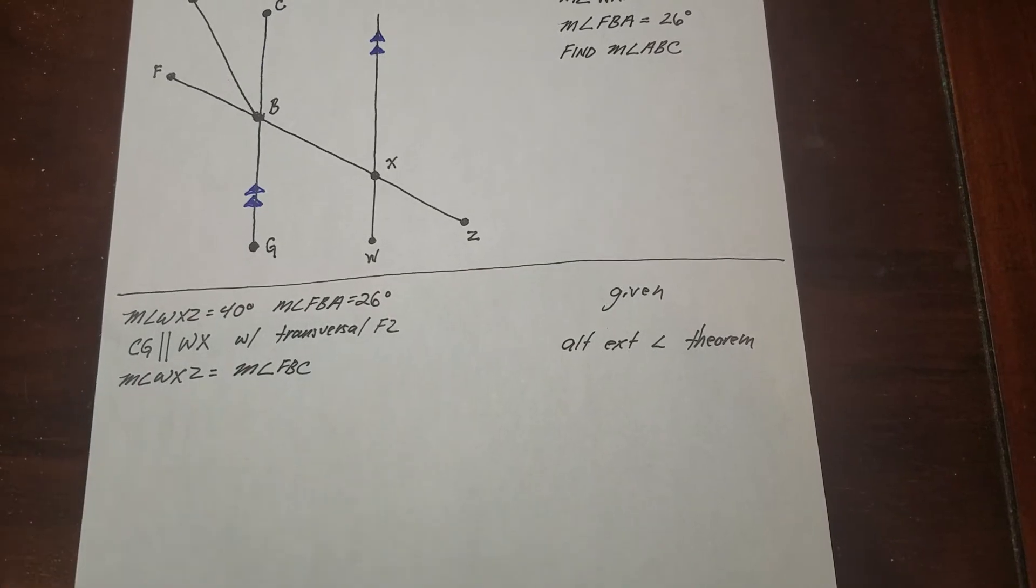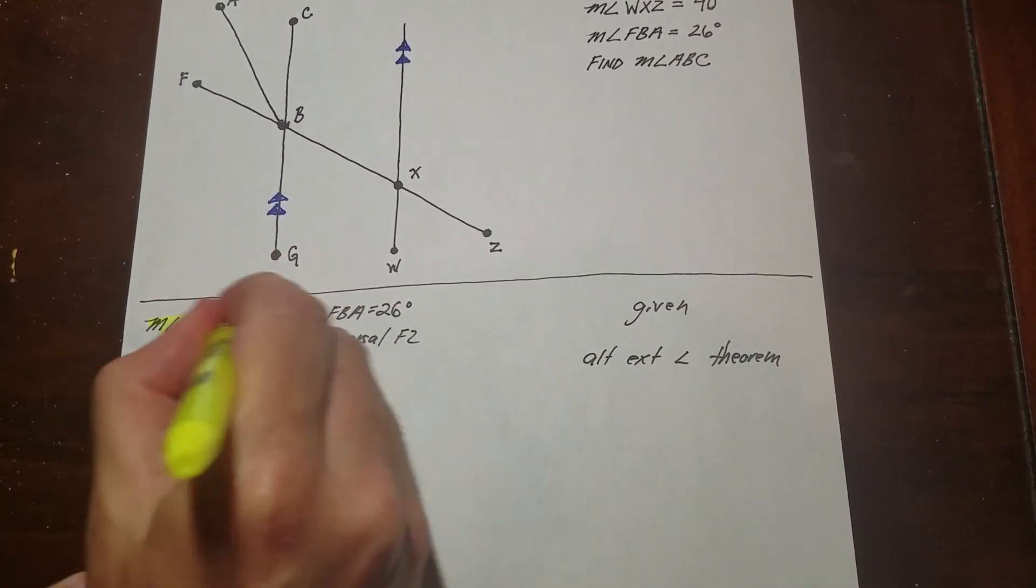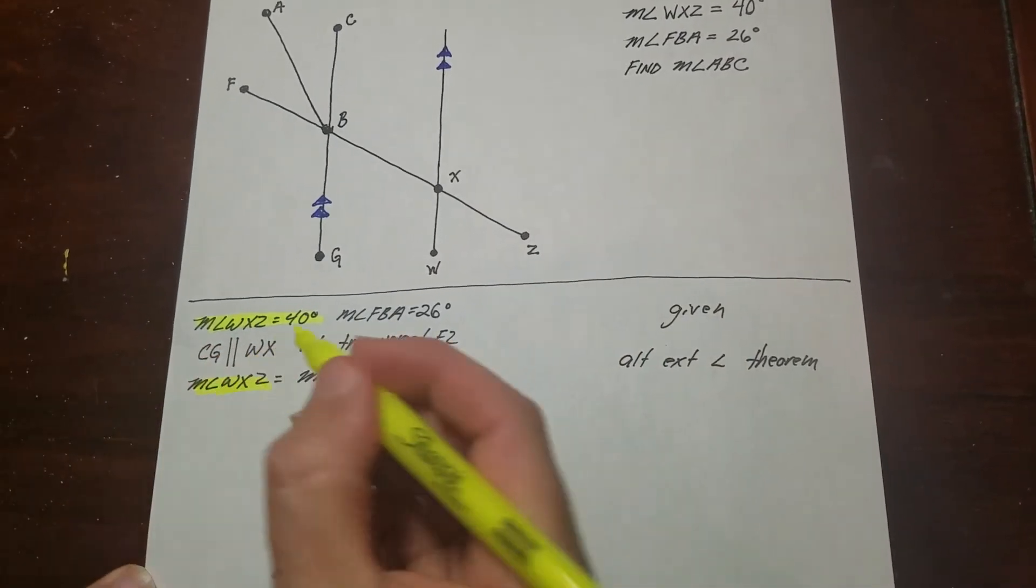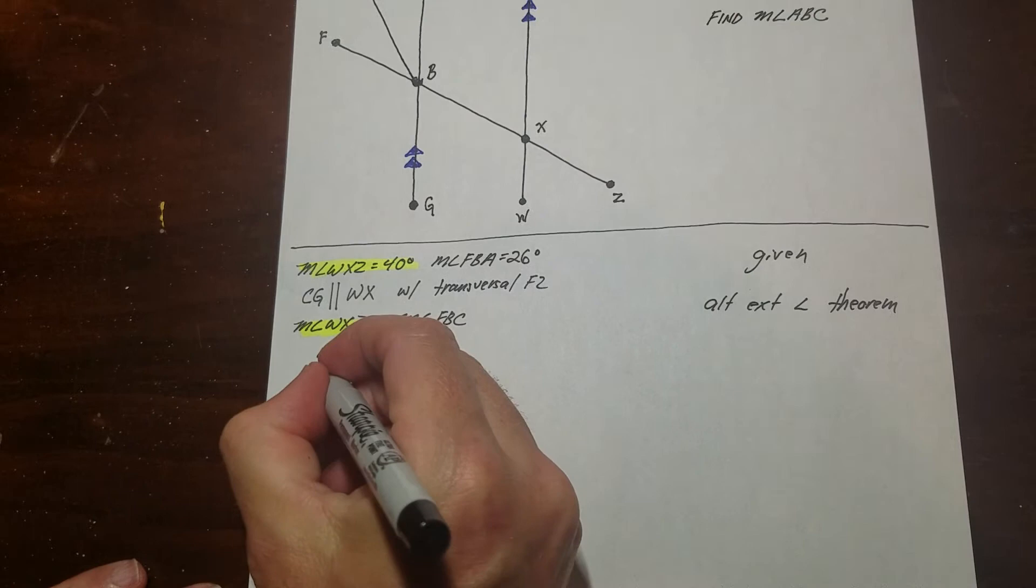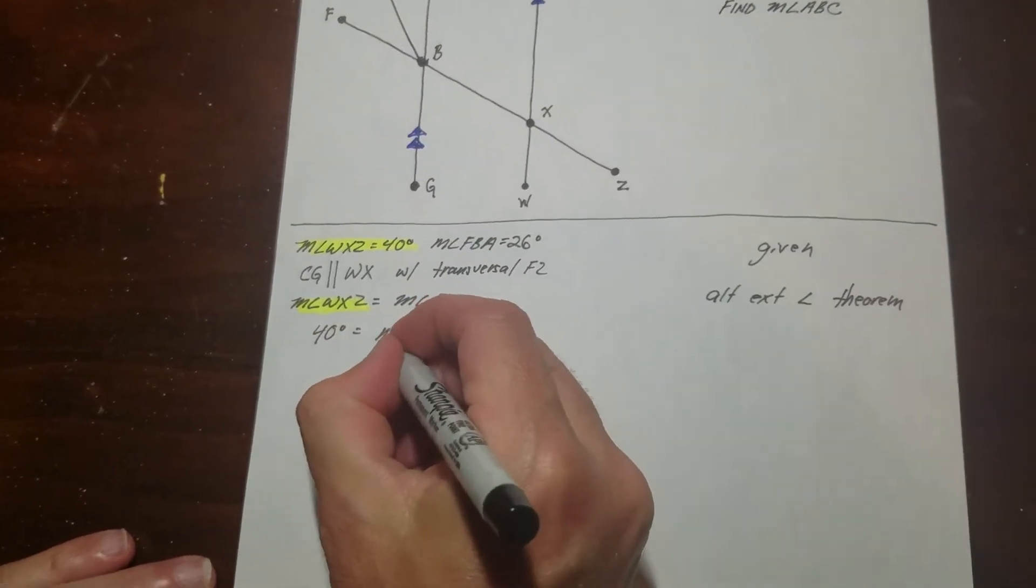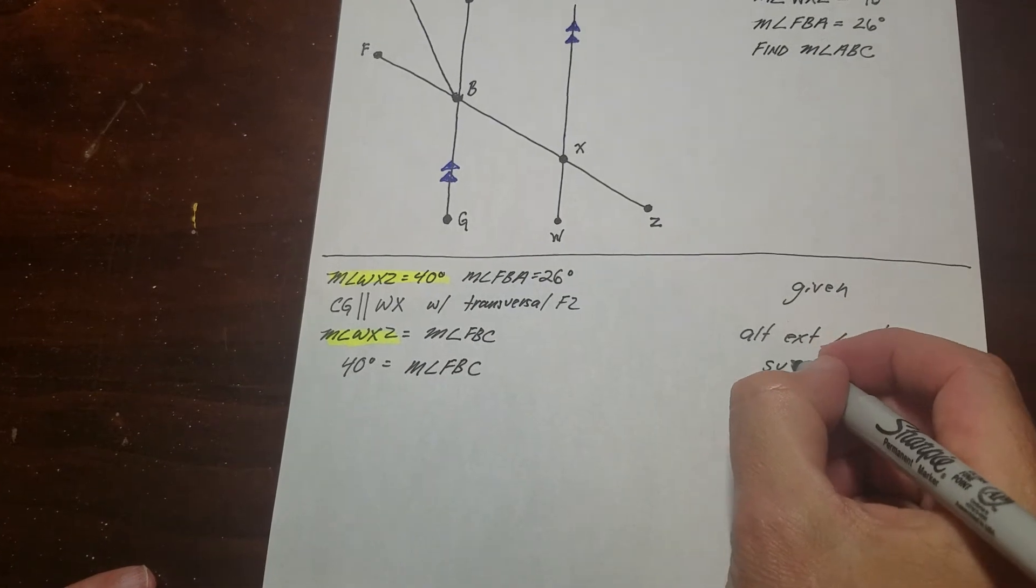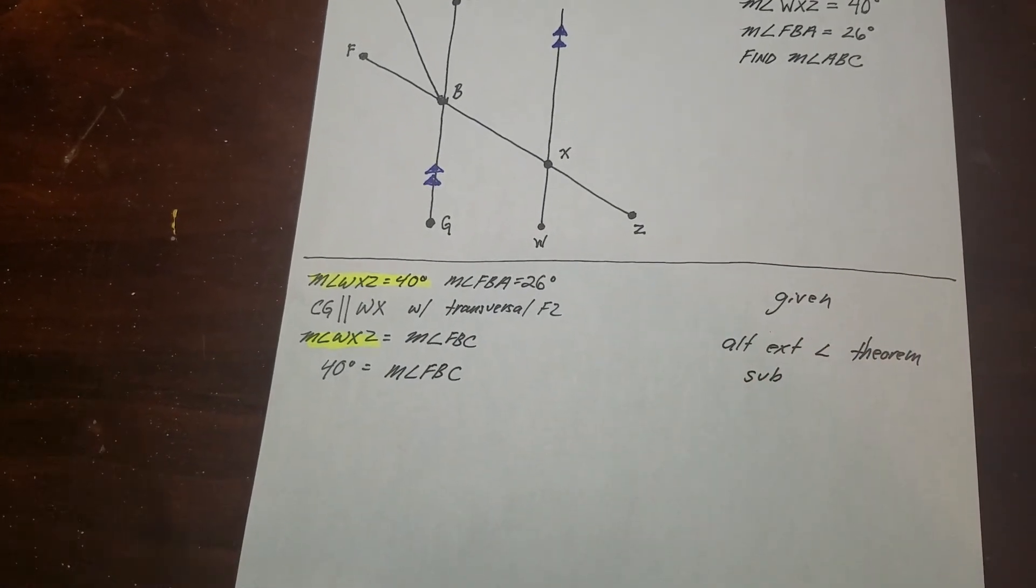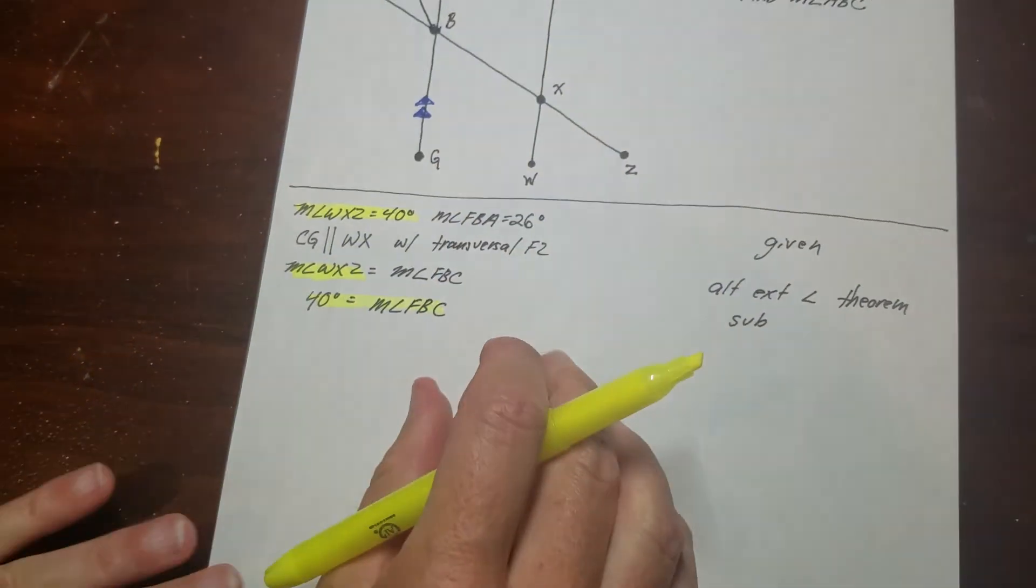Now I'm going to substitute. So when you substitute, we know that this one here is 40. So that's going to be 40. So then all I've got to do is pop a 40 in there. That's substitution. And I now know what the measure of that angle is.